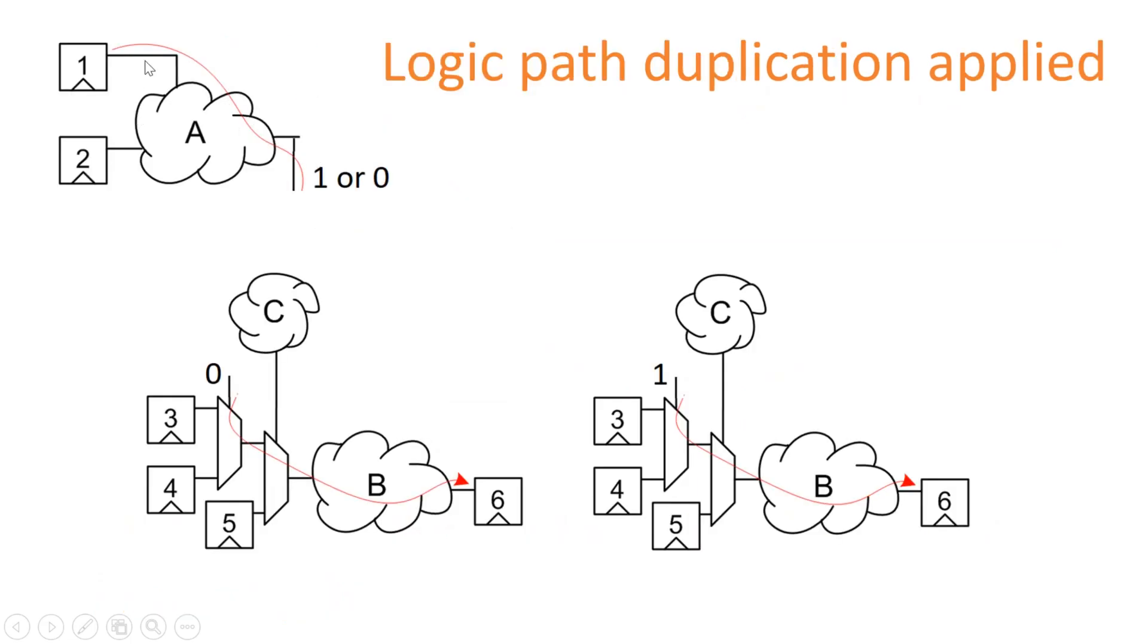This is the first portion of the critical path and I have duplicated these two units. Why I need these two duplicated units? Because output of this combinational logic A can be 0 or 1. So instead of applying the output of combinational logic A to this MUX, I am duplicating it. To the one unit I am giving 0 as an input and to the second unit I am giving 1 as an input.